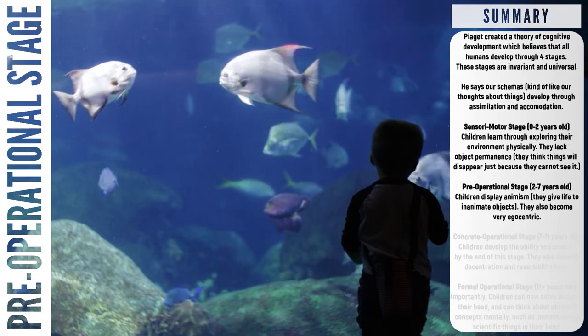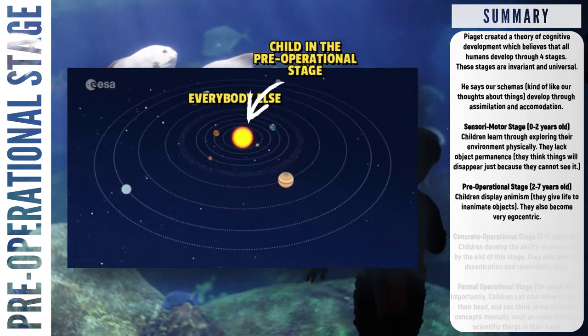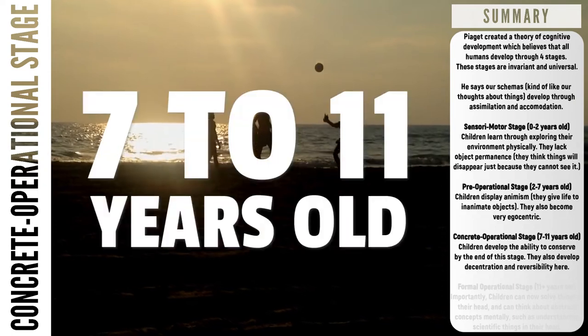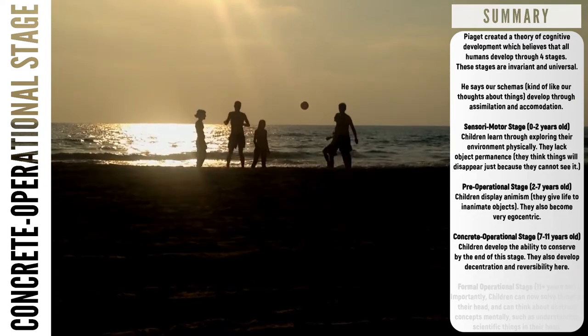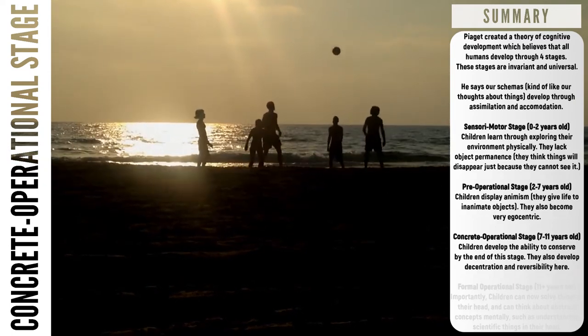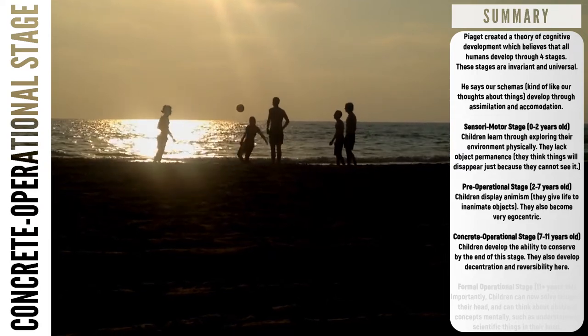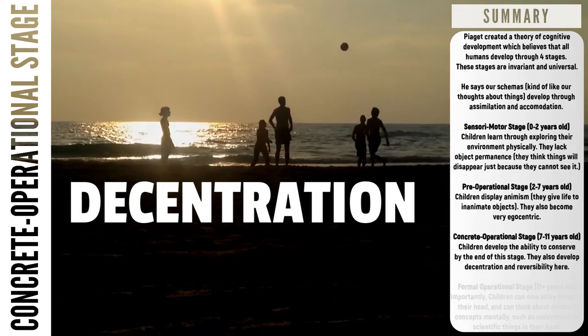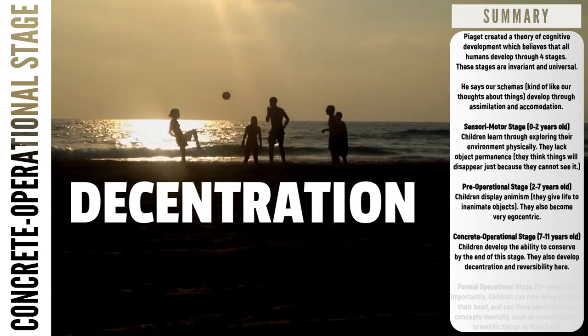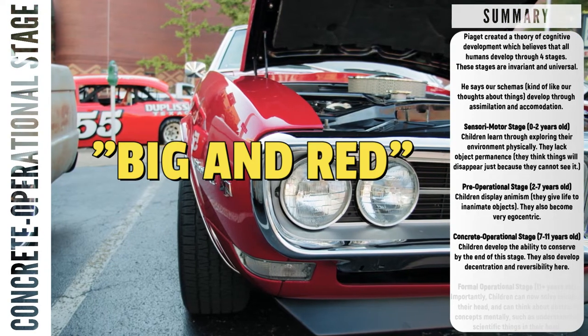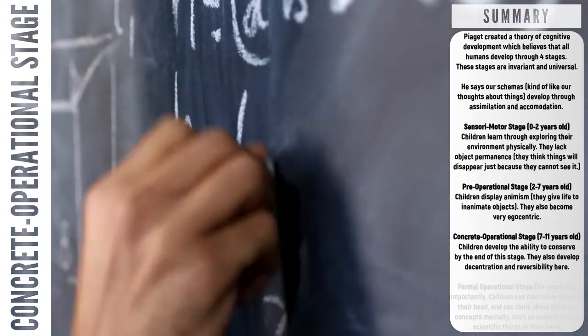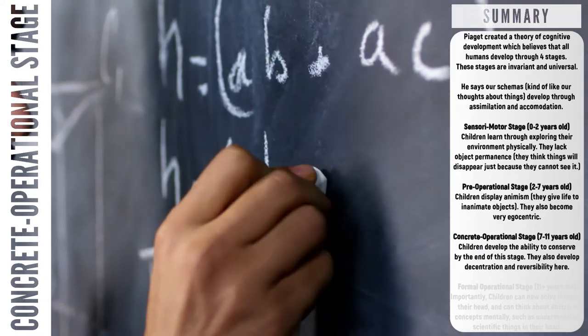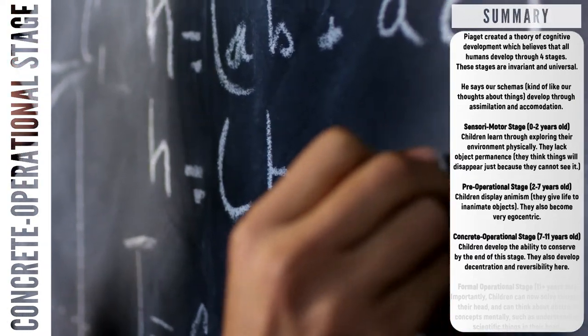The concrete operational stage is third and happens from seven to eleven years old. There are some new skills developed here. They start to become a little bit less egocentric. They also develop decentration, which means children are able to deal with two bits of information at the same time. For example, they can tell you that a car is big and red. Children also develop reversibility. Now they understand that objects or numbers can be changed and then taken back to their original form.